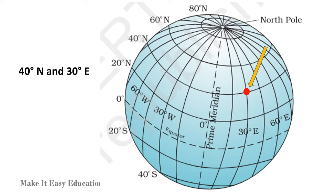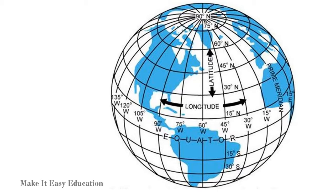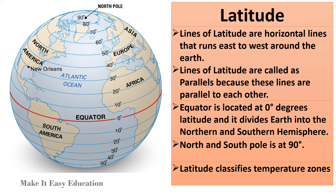Coordinates help to find the location of a place on the earth. Let us have a quick recap. Lines of latitude are horizontal lines that run east to west around the earth. Lines of latitude are called parallels because these lines are parallel to each other. The equator is located at 0 degrees latitude and it divides earth into the northern and southern hemisphere. The north and south pole is at 90 degrees. Latitude classifies temperature zones.